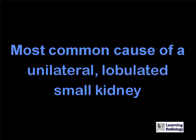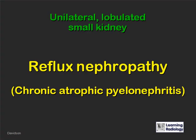What is the most common cause of a unilateral, lobulated, small kidney? Reflux nephropathy, chronic atrophic pyelonephritis.